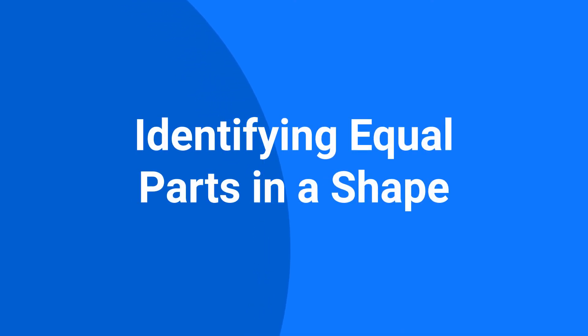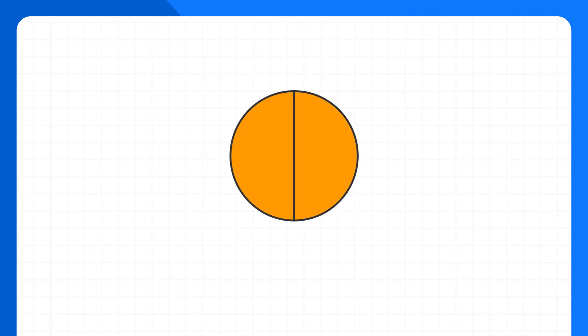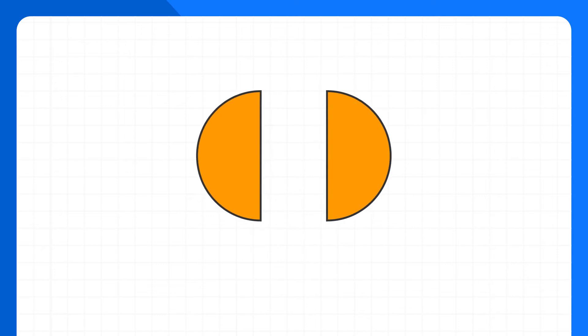Today we're learning how to identify equal parts in a shape. This circle is split into equal parts. We say the parts are equal because both of the parts of the circle are the same size.